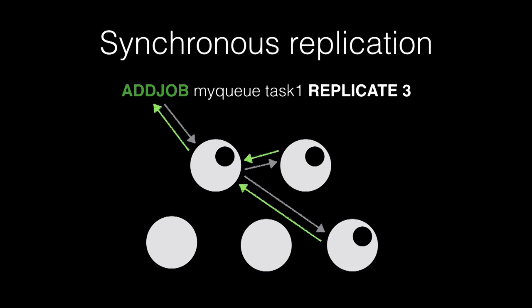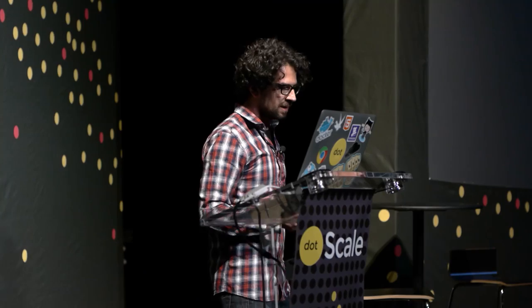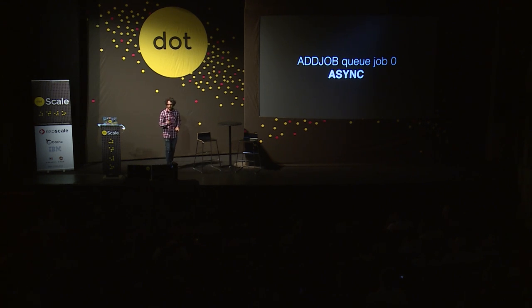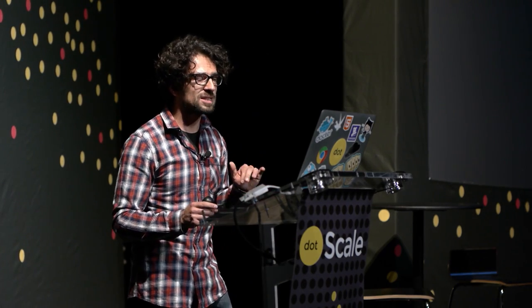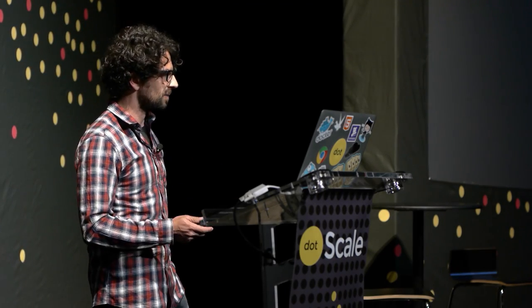Another option is Replicate. By default, Disque uses synchronous replication. If you use Replicate 3, it means ADDJOB will only return the OK with the ID after the message is replicated to three or more nodes, so you know that the specified number of copies exist inside the cluster. Synchronous replication can be slow for certain use cases, so you can opt out with the Async option — it will still try to replicate the specified number of times, but lets you get your message ID immediately. If it can't replicate the specified number of times, that's okay; it's best effort.